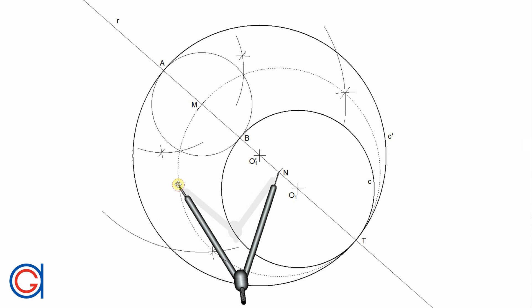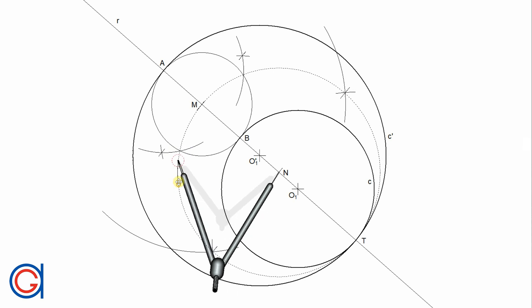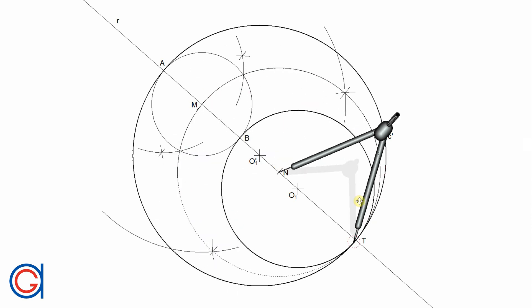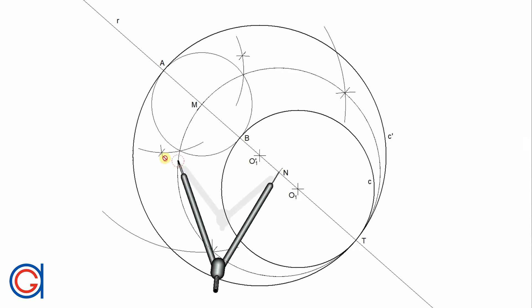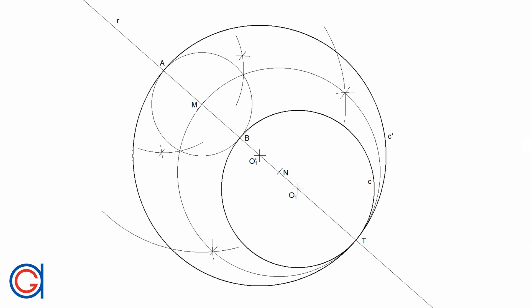This circle intersects the circle centered in M at two tangent points, C and D, as can be seen here. The next step is to draw the two tangent line segments joining point D with point T, and point T with point C.